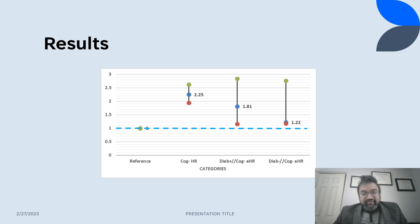It is important to note that the two on the right are adjusted hazard ratios, whereas the third one from the right is the cognitive dysfunction hazard ratio on its own.